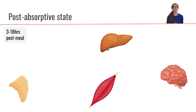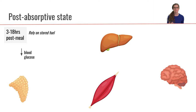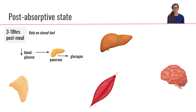Now let's look at the post-absorptive state. The post-absorptive state is 3 to 18 hours after our meal. During the post-absorptive state, we're now going to start relying on stored fuel — fuel that is stored in our organs. So our blood glucose concentration is going to start to decrease.